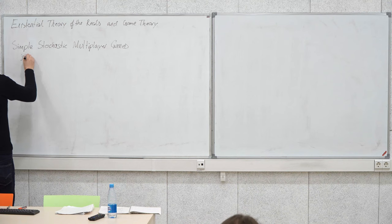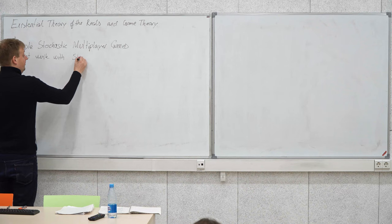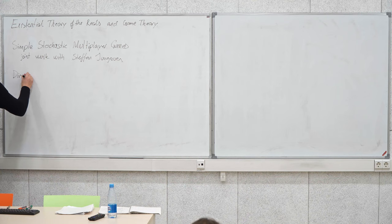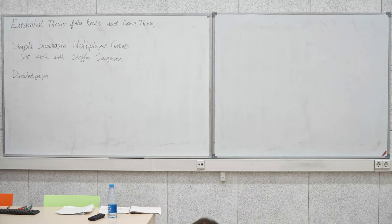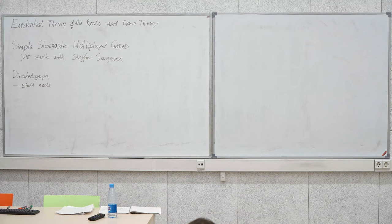This is joint work with Stefan Janssen. So, what is a simple stochastic multiplayer game? We are given a directed graph with a designated start node — some place we start the game. Non-leaf nodes of the graph are divided into nodes of players and chance nodes.